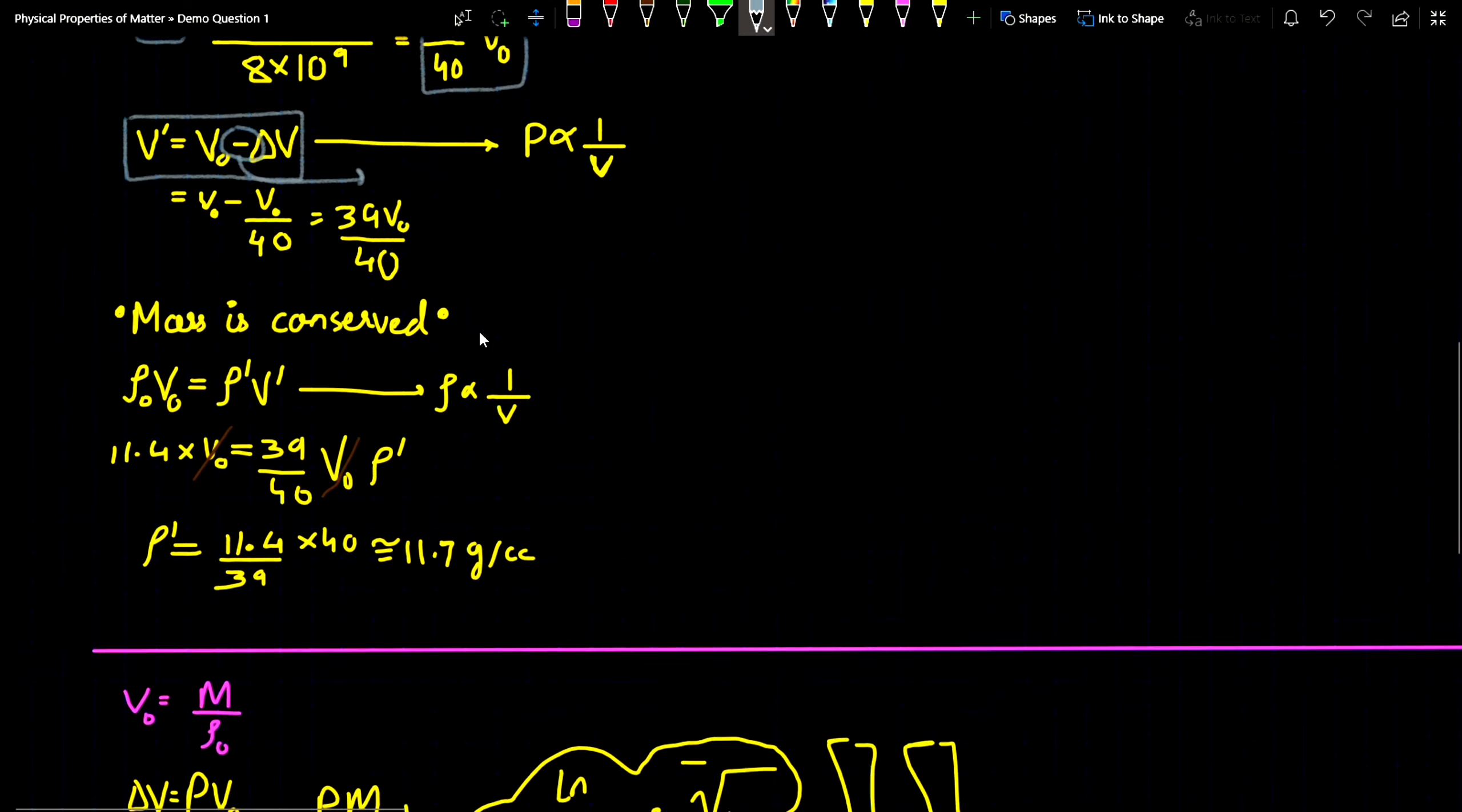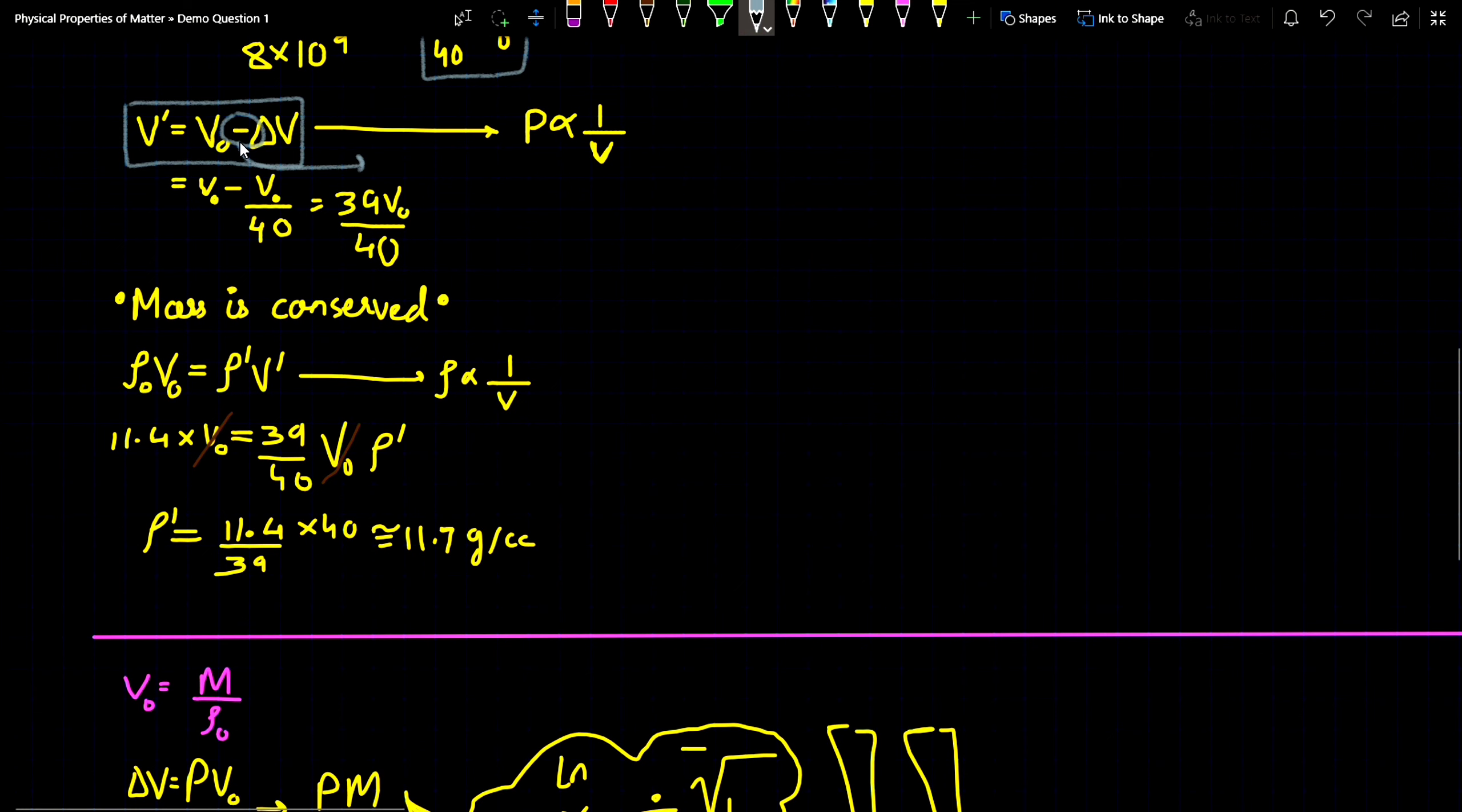While applying this pressure, the volume will surely decrease. So due to decrease in volume we have to put this minus sign over here, not the plus sign. The final volume V' you will get as V₀ - V₀/40 which is 39V₀/40.